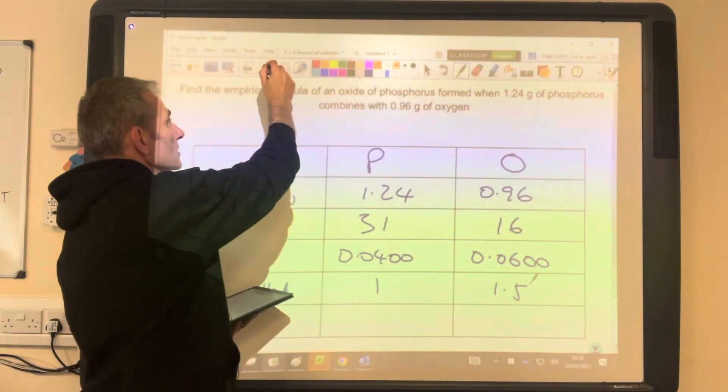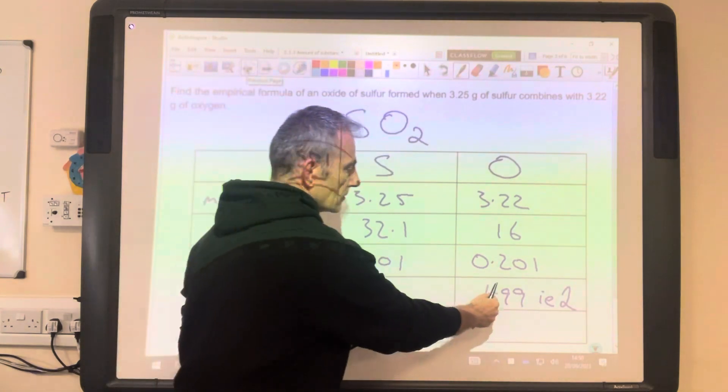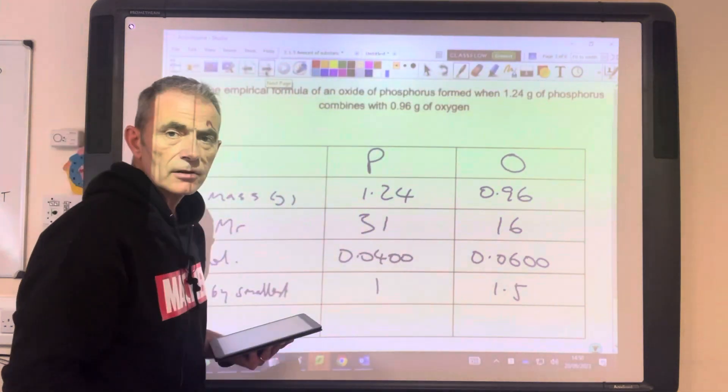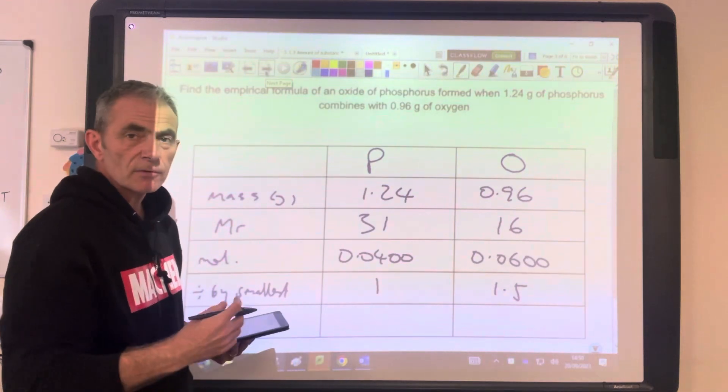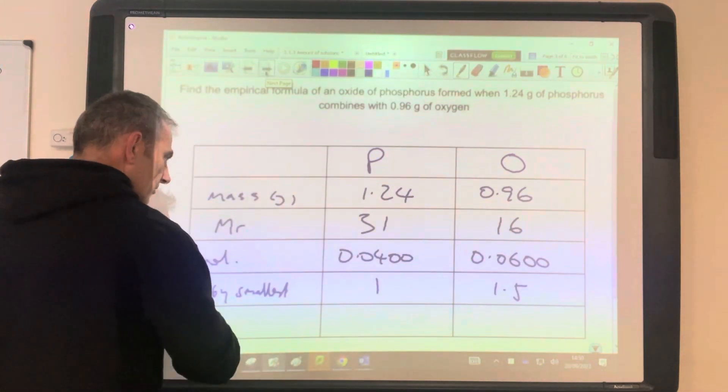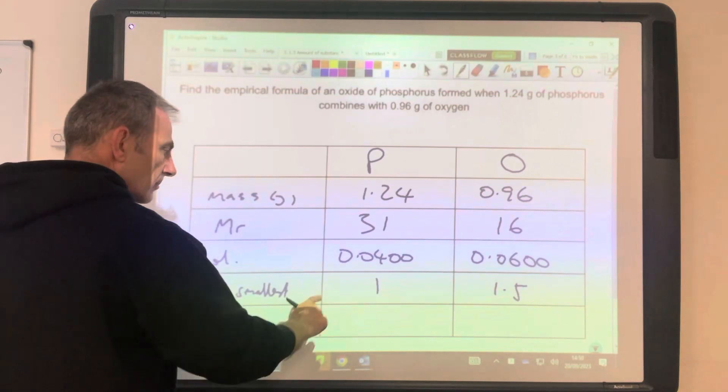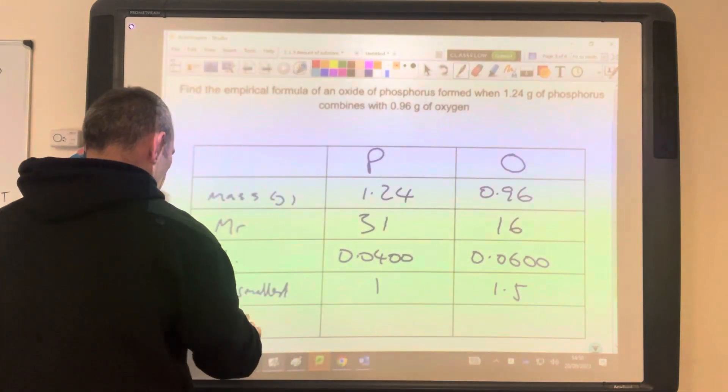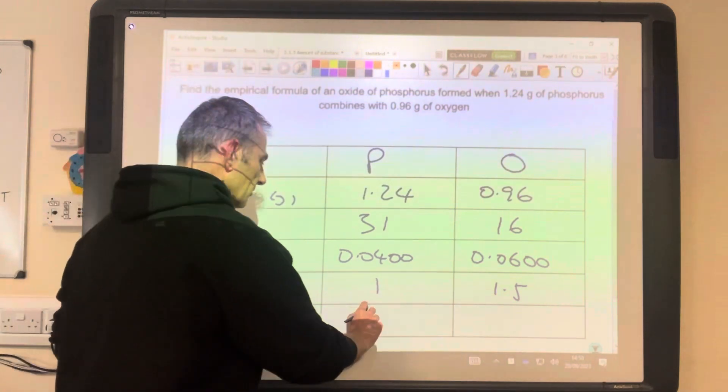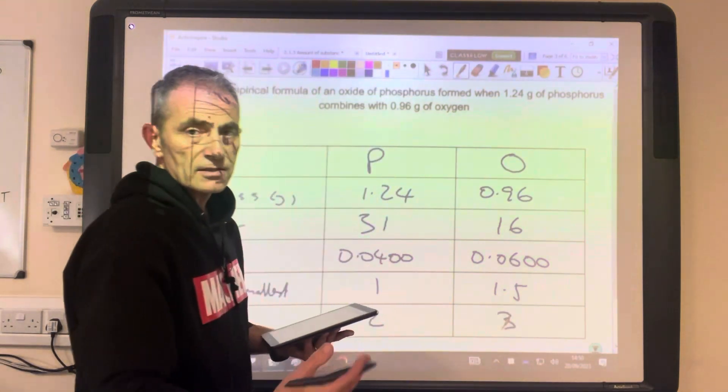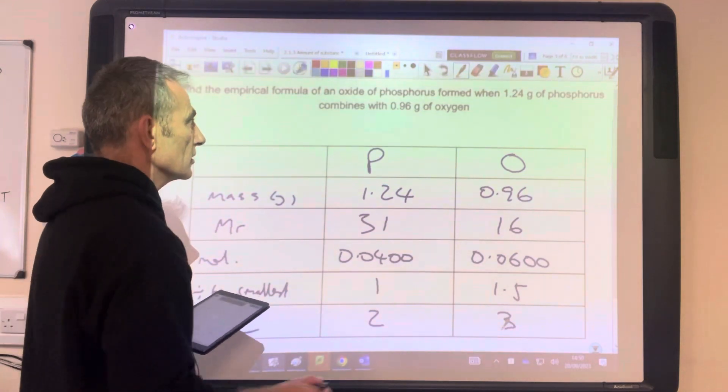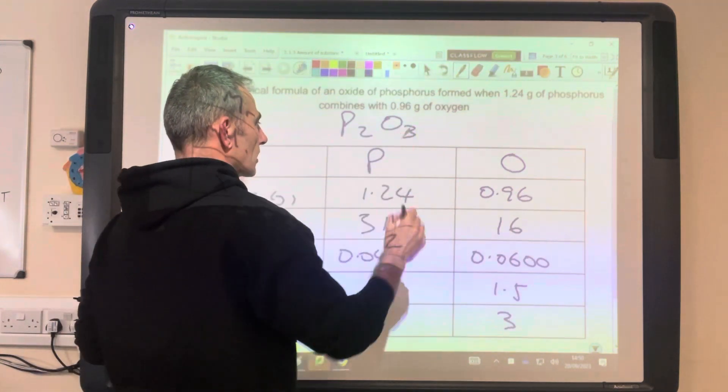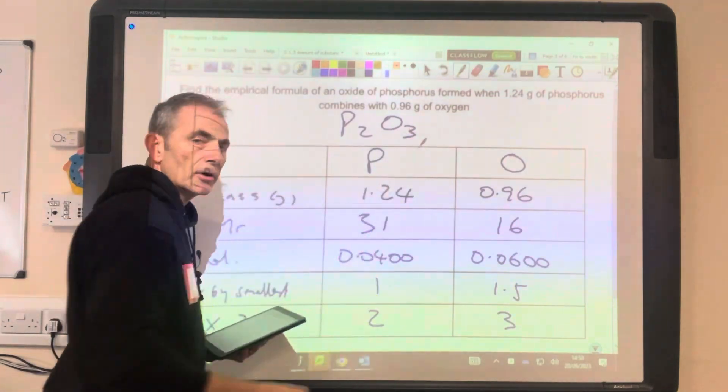So remember in the last example, we rounded that up to 2, so close to 2. That's not close enough. So what we do now is we would multiply out. So that's why we need this extra line. And we're going to multiply them both by 2, because we've got 0.5 there. So if we multiply by 2, we're going to get a 2 to 3. That's your simplest total number ratio. So this is P2O3.